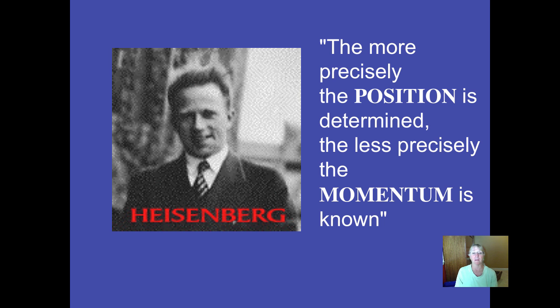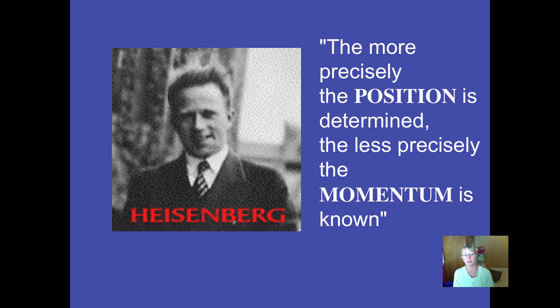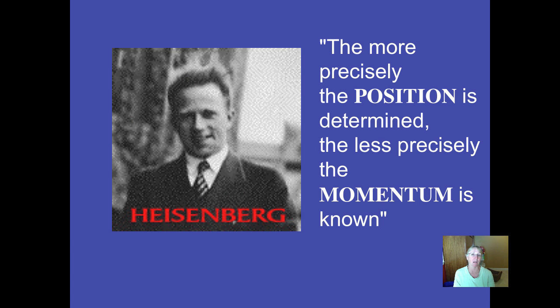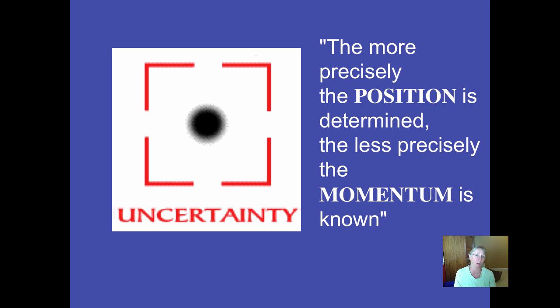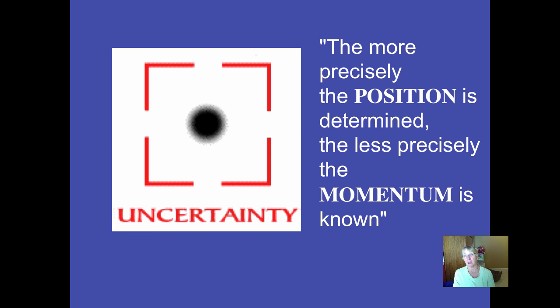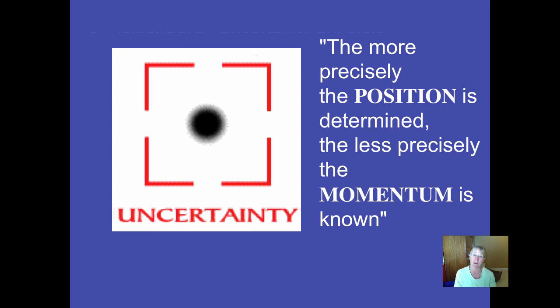The problem is you can never be certain of where an electron is. This is the famous Heisenberg uncertainty principle. Basically he was saying if you can kind of figure out where they are, you don't really know how fast they're going. Or if you kind of know how fast they're going, you're not really entirely sure where they are. It's pretty weird.